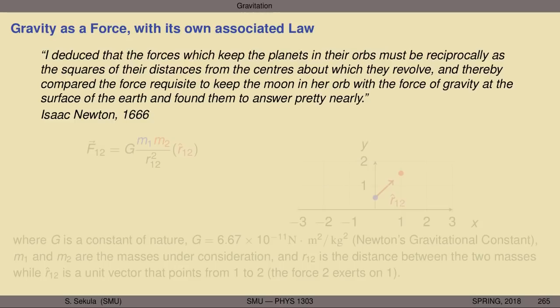Quoting from Isaac Newton himself in 1666: 'I deduced that the forces which keep the planets in their orbits must be reciprocally as the squares of their distances from the centers about which they revolve, and thereby compared the force requisite to keep the moon in her orb with the force of gravity at the surface of the Earth, and found them to answer pretty nearly.' What Newton discovered was that if you attacked those two phenomena — planets moving in orbits and things falling near the surface of the Earth — assuming a force whose strength goes as the distance squared between the objects, you could relate the moon's orbit around the Earth with the falling of objects on the surface of the Earth using the same force equation. That's a stunning revelation.